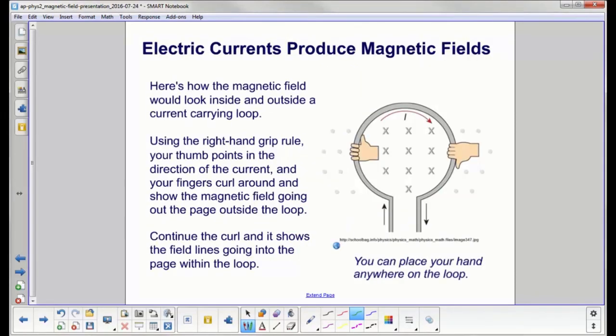Here's how the magnetic field would look inside and outside a current-carrying loop. Here I have a loop of wire, the current's coming like this. Using the right-hand grip rule, we would grab the wire either here or here. Again, this is just figurative, we're not finding a wire somewhere and grabbing it. You point your thumb in the direction of the current. On this side your thumb's pointing up because the current's going up. On this side your thumb's pointing down as you grip the loop because the current is going down. Curl your fingers around the loop. Outside the loop your fingers are pointing out of the page, so the magnetic field is dots. If I keep curling my fingers within the loop, the magnetic field goes into the page. You get the same result with your hand over here. You could put your hands anywhere you want and you would get the same result.